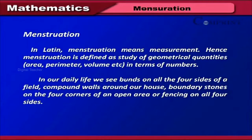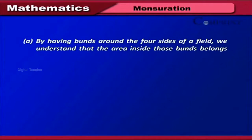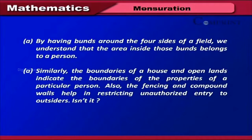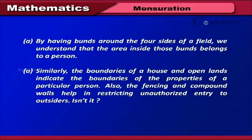Introduction. In our daily life, we see bunts on all four sides of a field, compound walls around our house, and boundary stones on the four corners of an open area, or fencing on all four sides. By having bunts around the four sides of a field, we understand that the area inside those bunts belongs to a person.